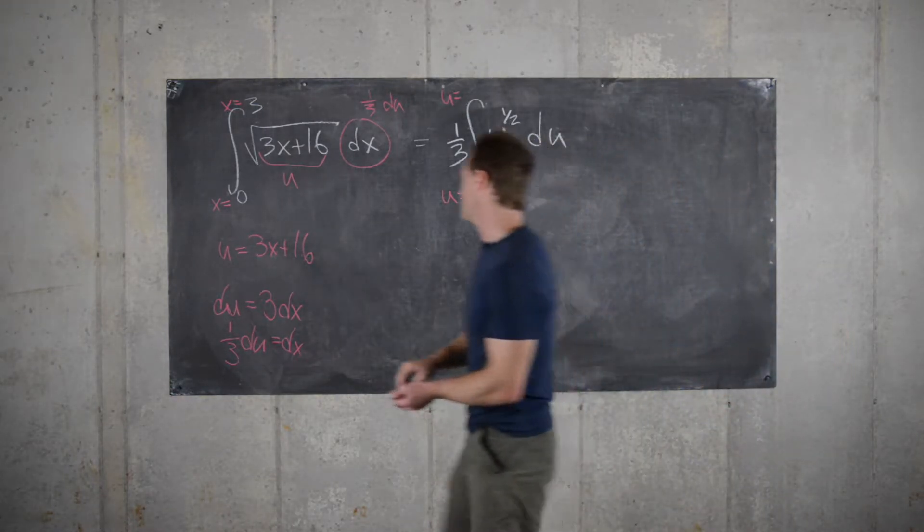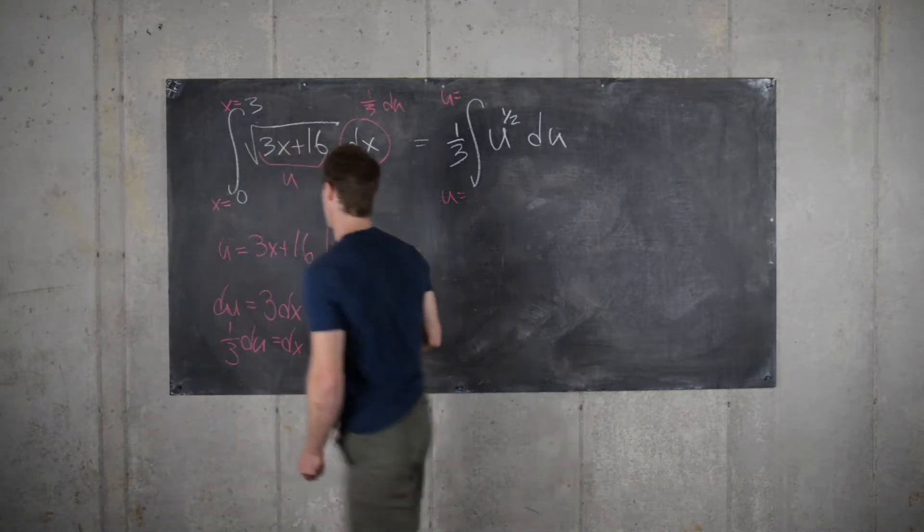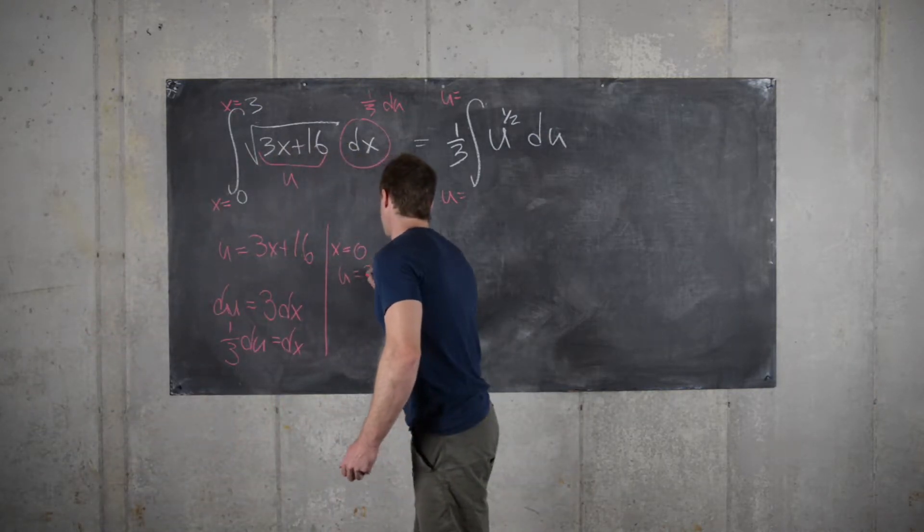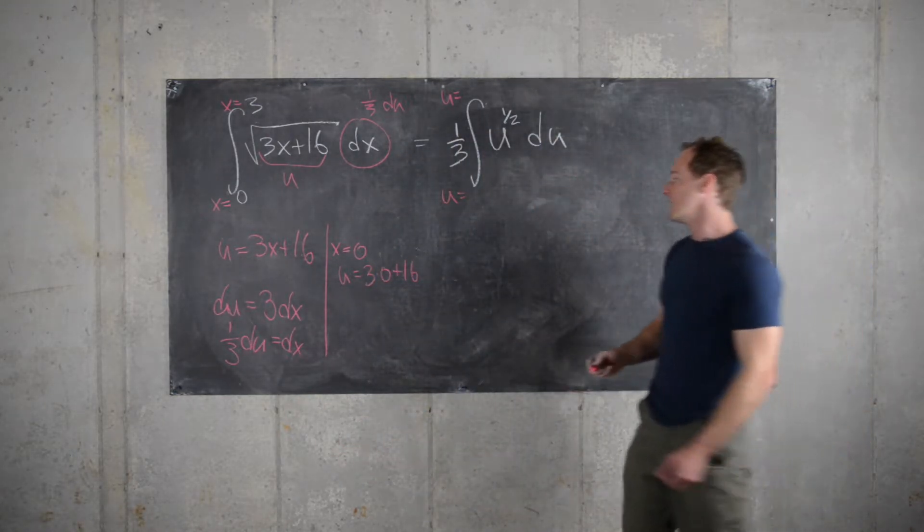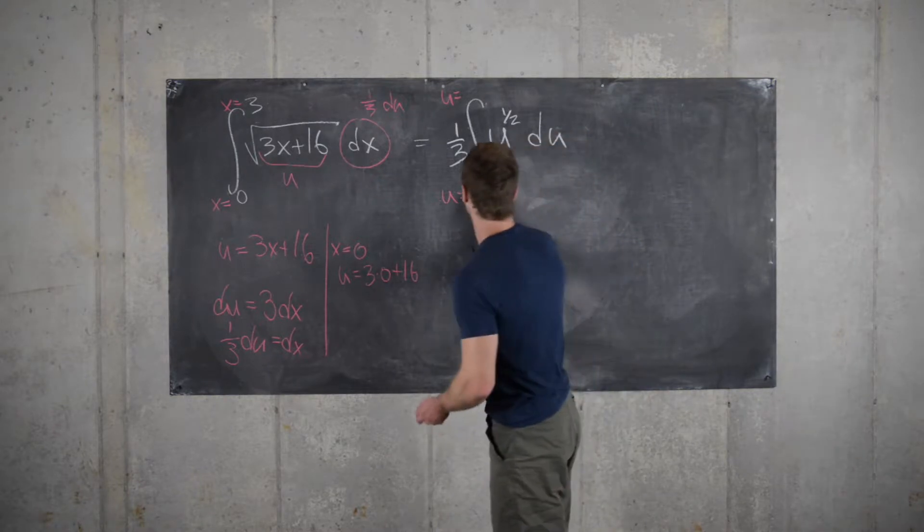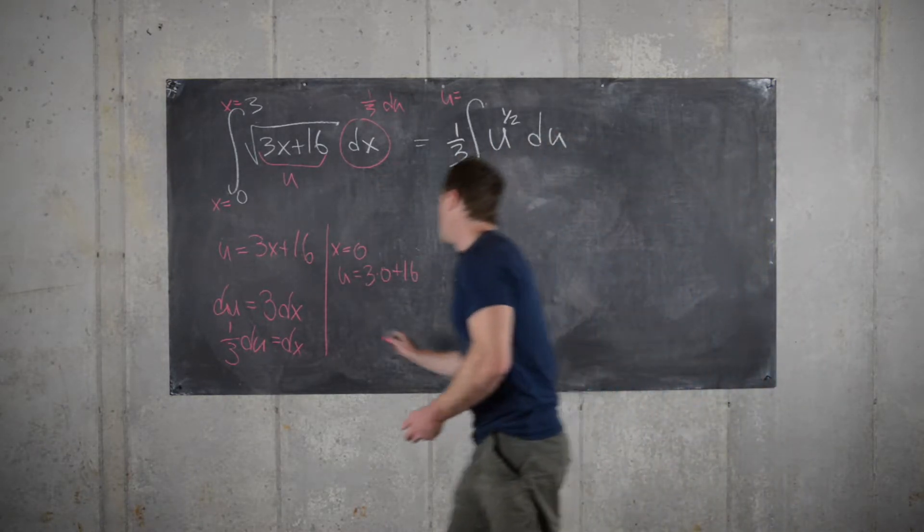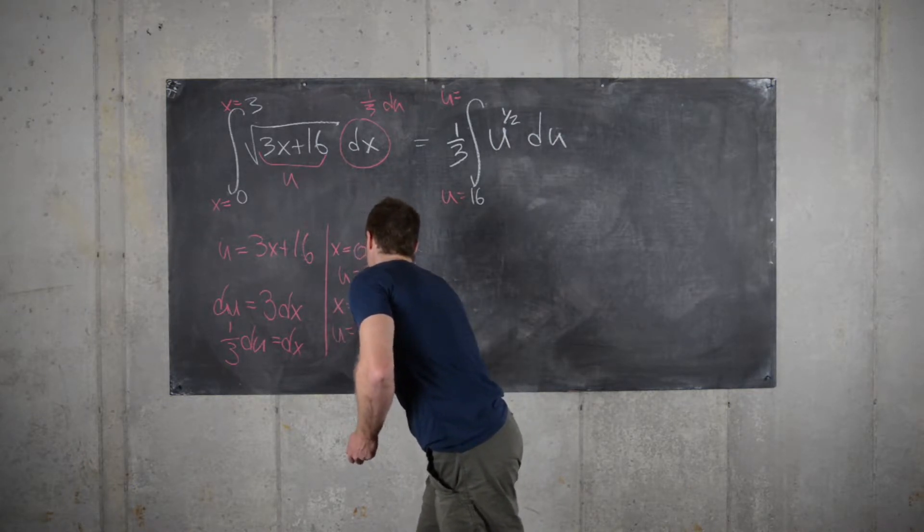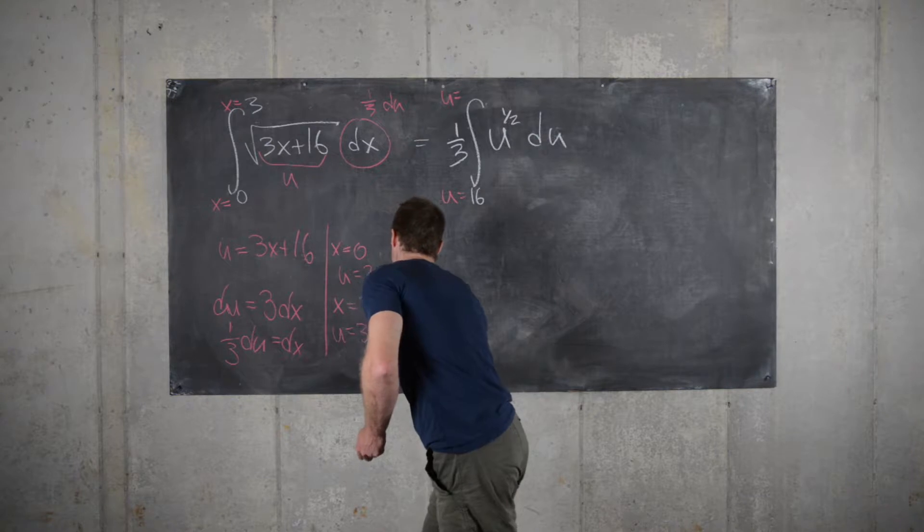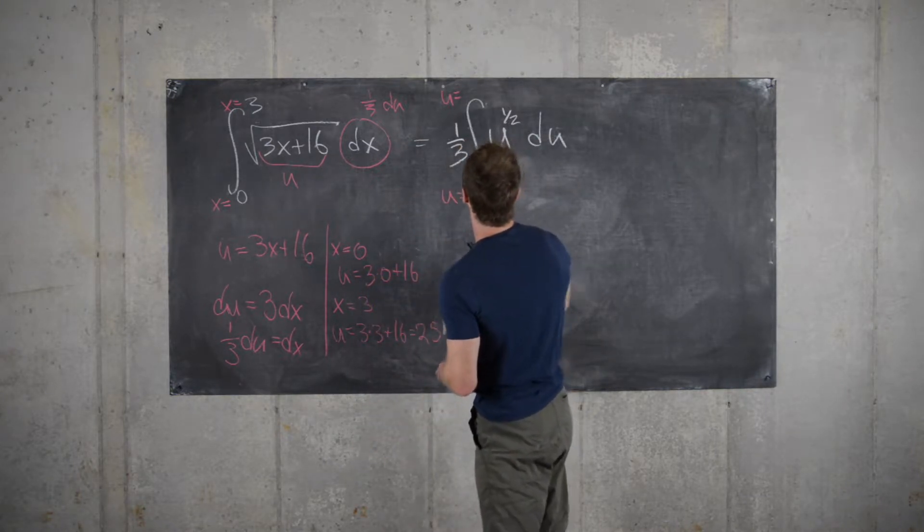If x equals 0, then that means u equals 3 times 0 plus 16, so that gives us u equals 16. And then if x equals 3, that means u equals 3 times 3 plus 16, which is 25. So we get u equals 25.